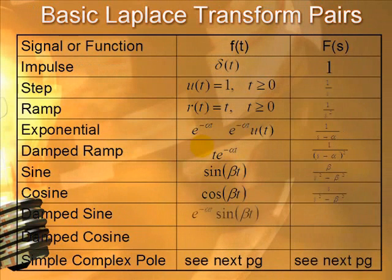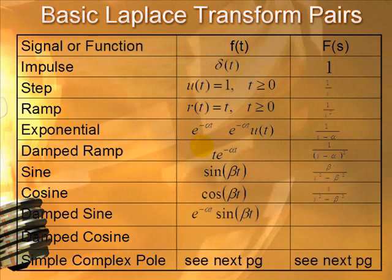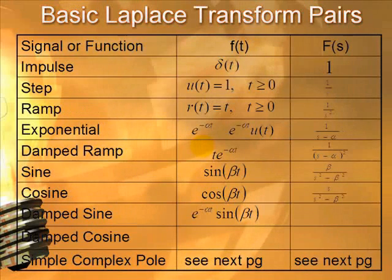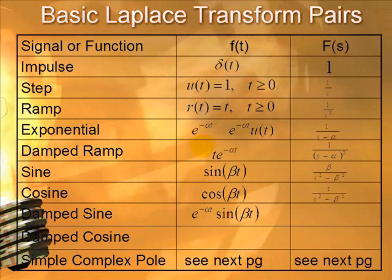Now, we have a damped sine. But we saw that the modulating property says in the time domain, we place everywhere there's an s, we replace it with s plus alpha. So, here in the sine, it's beta over s squared plus beta squared. So, we replace the s squared with s plus alpha squared. And that's all there is to it.